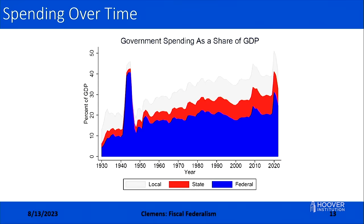To some extent the growth of state governments is driven in meaningful part by the fact that they are the primary entity operating the Medicaid program — health insurance for low-income individuals — which has expanded substantially over this time period. In general, you can see a moderate increase in decentralization, with the federal government's share of total government activity moderately declining as state governments have substantially expanded.